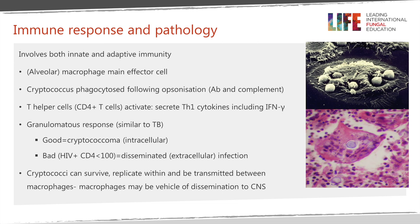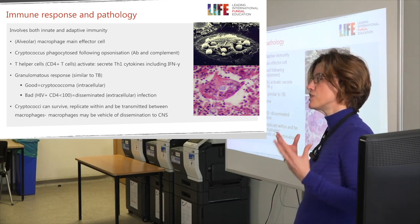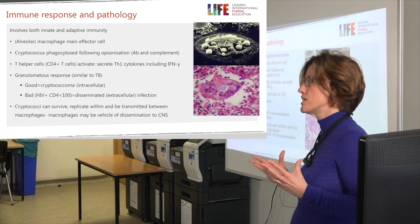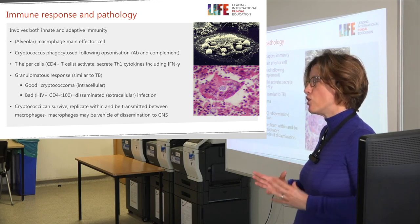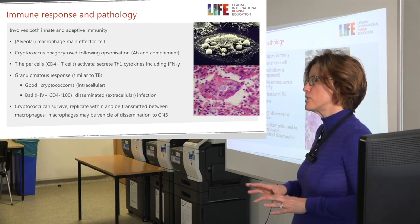To help destroy cryptococcus within the macrophage, there is an interaction between the macrophage and CD4-positive T cells, so-called T helper cells, which are profoundly low in advanced HIV. The macrophage is activated by the secretion of pro-inflammatory Th1 cytokines, most importantly interferon-gamma. This response induces a pathological lesion shown here in the diagram known as a granuloma, which is a mixture of lymphocytes and macrophages with internalized fungus. This response is pathologically very similar to tuberculosis. If a person has good cell-mediated immunity, the infection is walled off, producing nodules or lesions called cryptococcomas, which can occur both in the lung and in the brain, with the organism predominantly inside the cells.